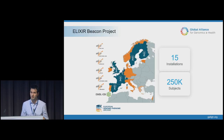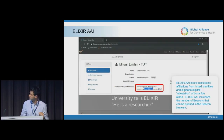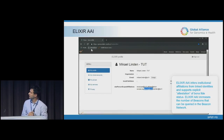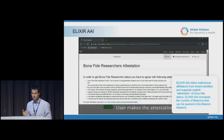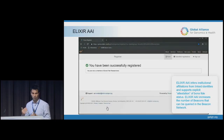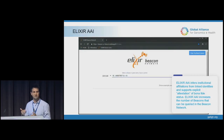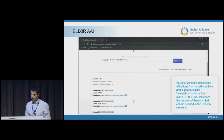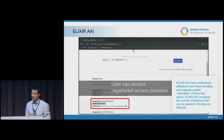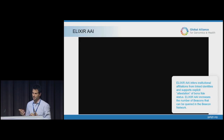This effort has been really championed by Elixir and the Elixir Beacon Project. They are taking this initiative and deploying both public and controlled access beacons right across Europe — there are 15 installations collectively serving over 250,000 subjects. The Elixir AAI is the identity management console; it infers institutional affiliations from linked accounts and supports explicit attestation that you are a bona fide researcher according to GA4GH policies. After attesting to bona fide research status, you gain access to more beacons.